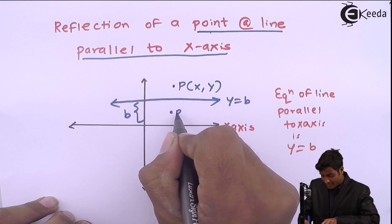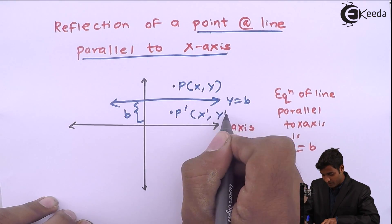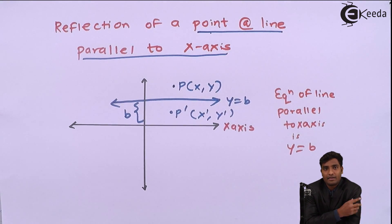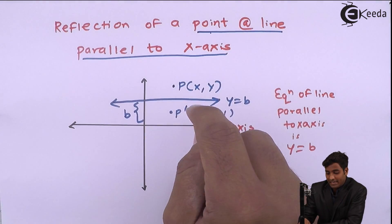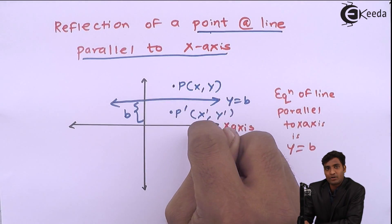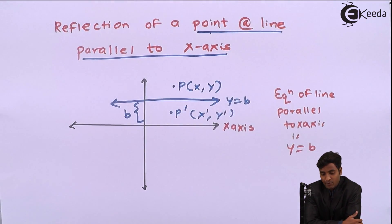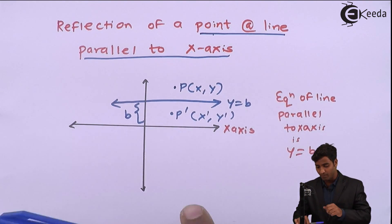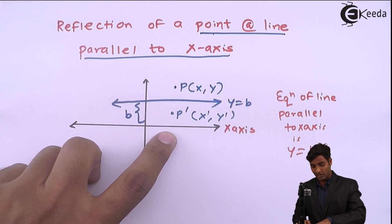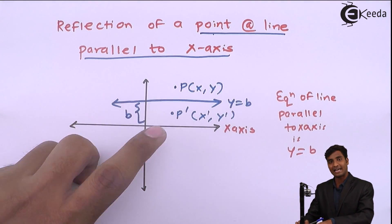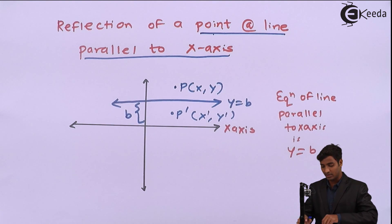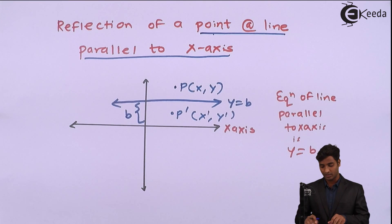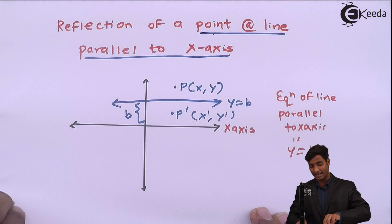The reflected point, I will name it as P-dash as x-dash and y-dash. We don't have any standard matrices for reflecting a point about a line parallel to x-axis, so we will derive it. We have the reflection about x-axis. For that, I have to bring this line onto the x-axis because we can directly use the reflection or mirror about x-axis. For that, I will have to perform the translation transformation. So the first transformation I will perform is translation.